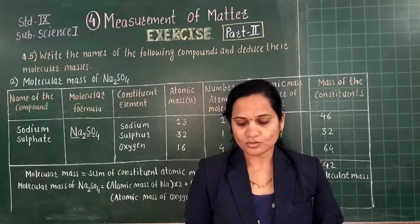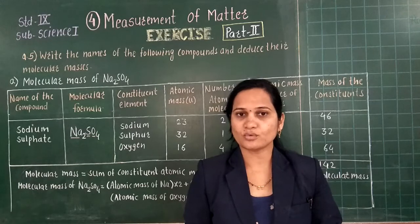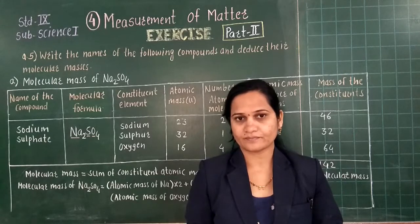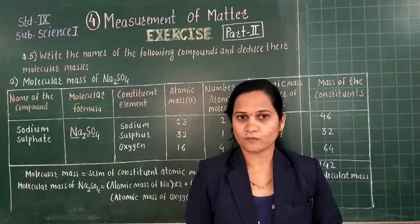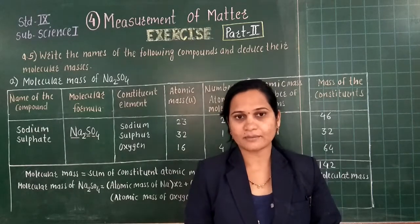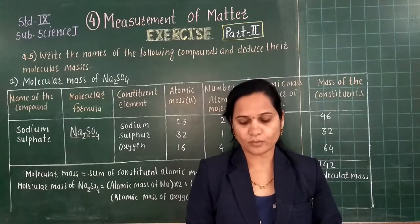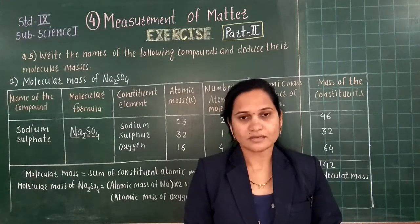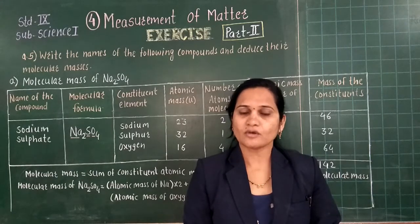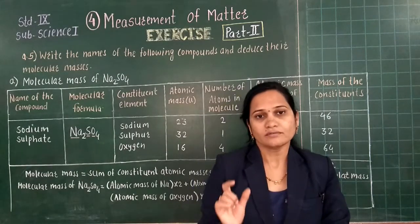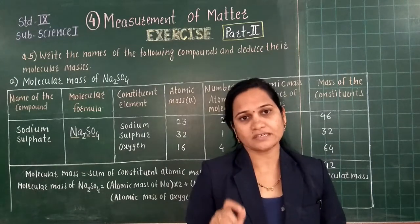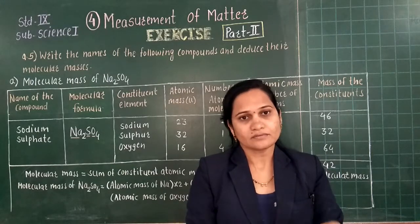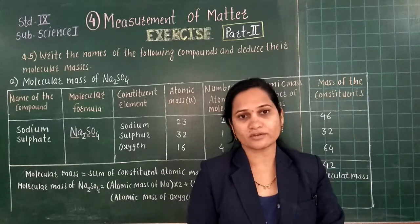Write answer to the following question and explain your answers. Open your textbook page number 57, see question number 4, and first we will see question number A. For this question I will give you the main points that you have to mention in the answer, because the full answer I cannot explain here.